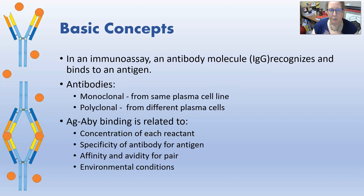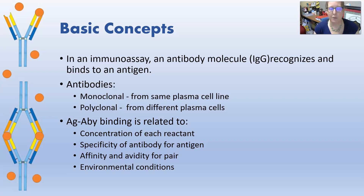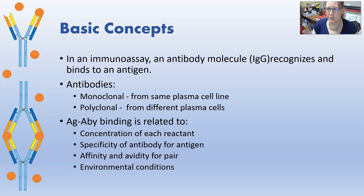In an immunoassay, an antibody molecule — usually IgG — recognizes and binds to an antigen, which is what is trying to be detected. An antigen could be a protein, like a drug or a vitamin we're trying to detect, but an antigen could also be another antibody if we're trying to detect it — so you can have an antibody to an antibody.